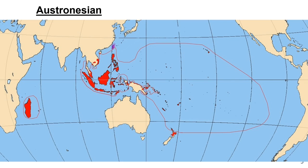Here we have the Austronesian language family. You can kind of see where it's based — primarily in Indonesia, basically Southeast Asia, and then Madagascar, which is part of Africa. We also have a little bit of northern New Zealand, Malaysia, Taiwan, and the Philippines. Those are the main countries in this language family.